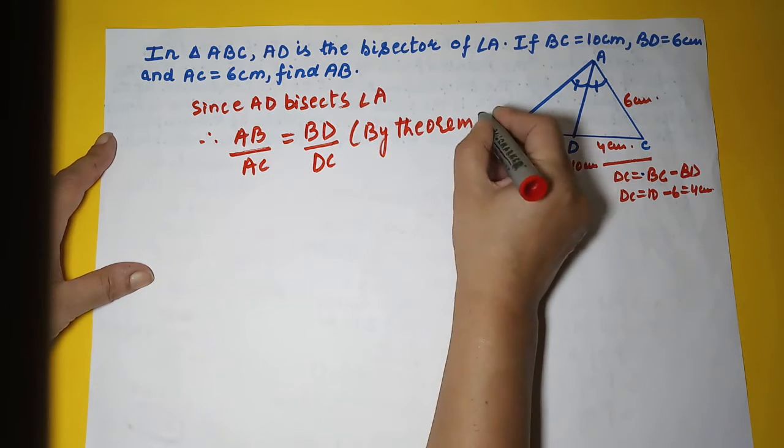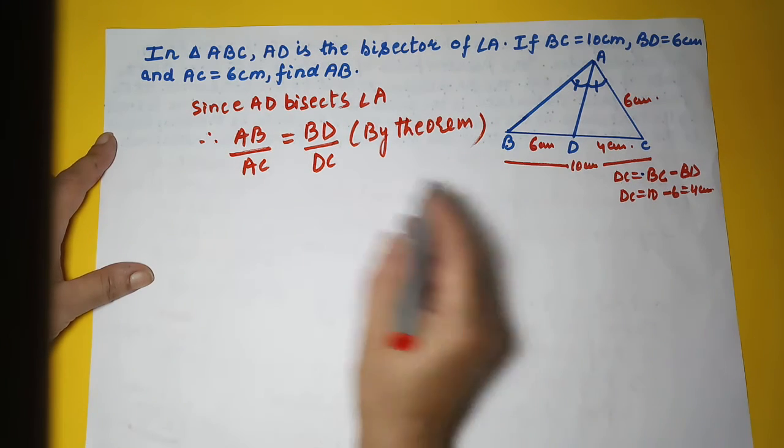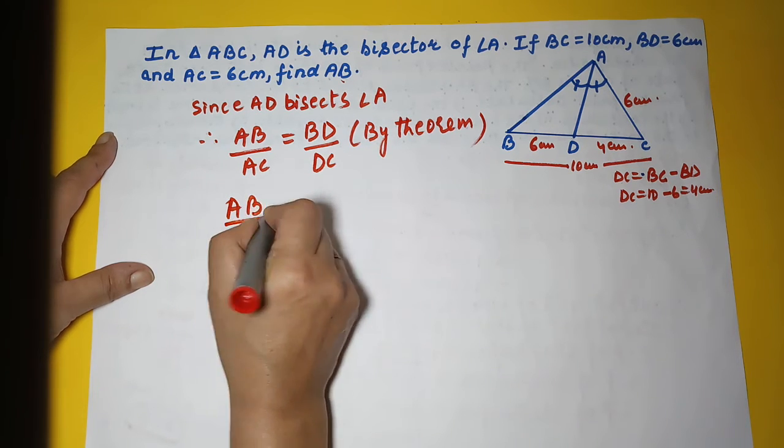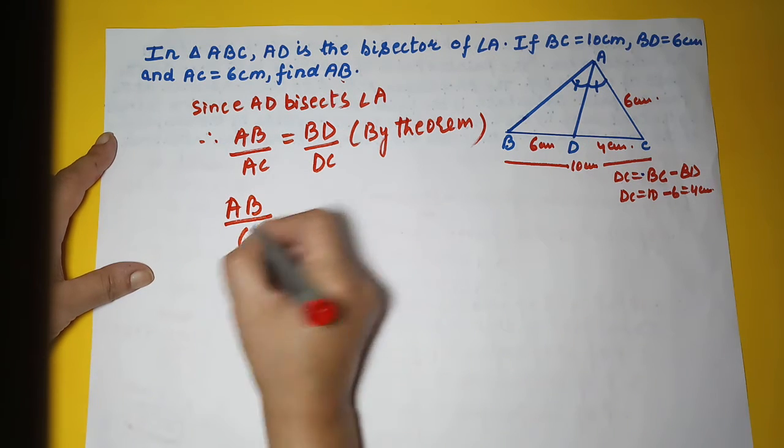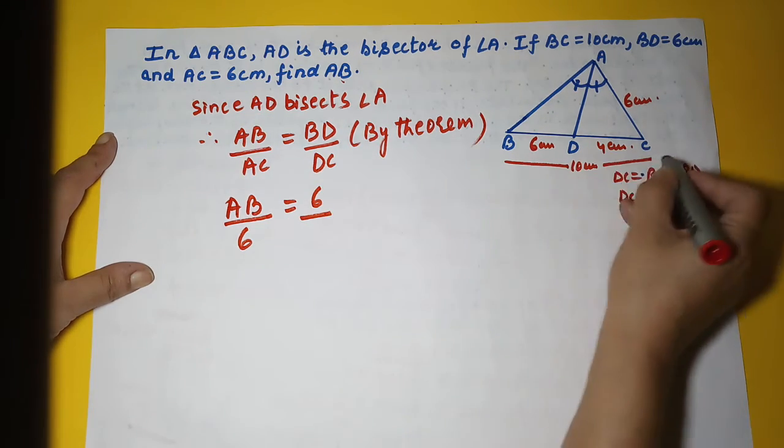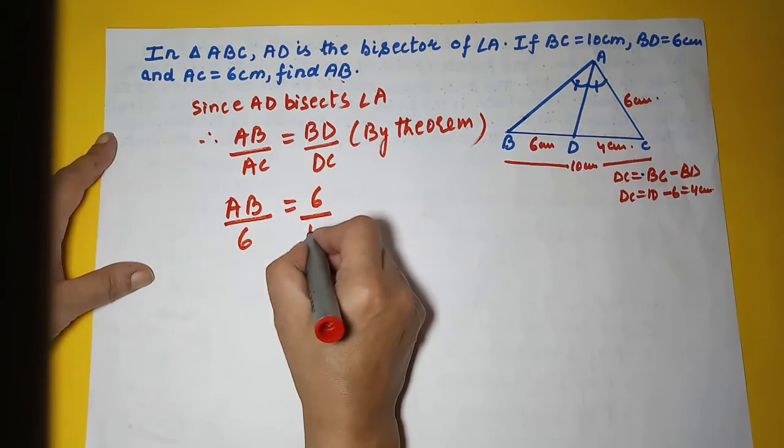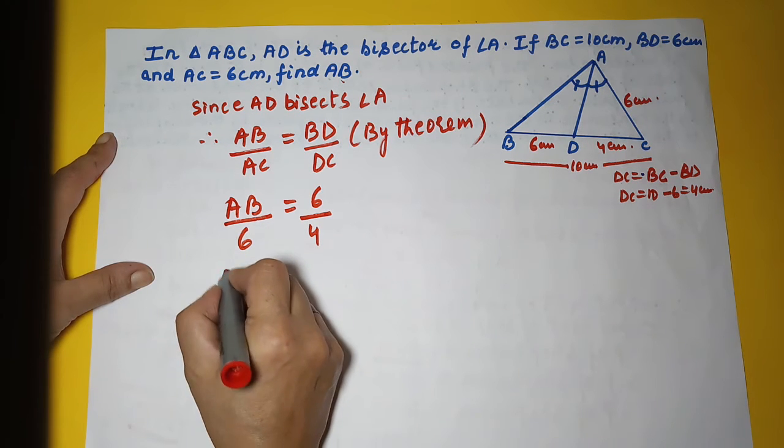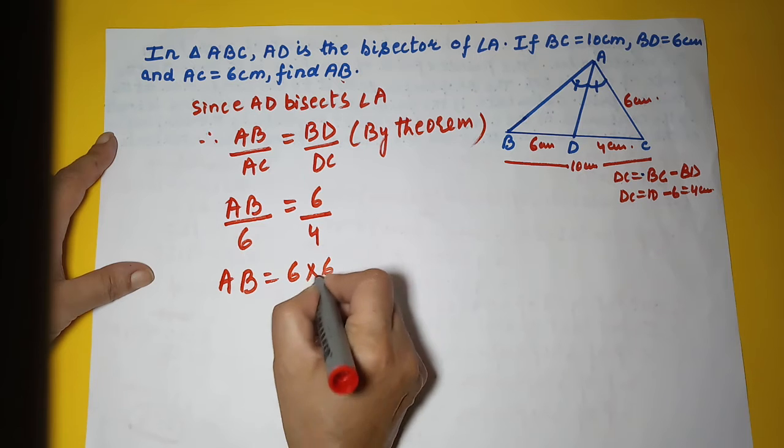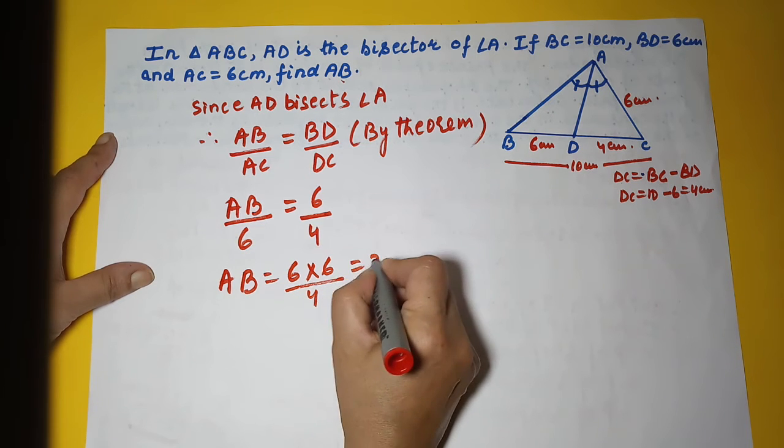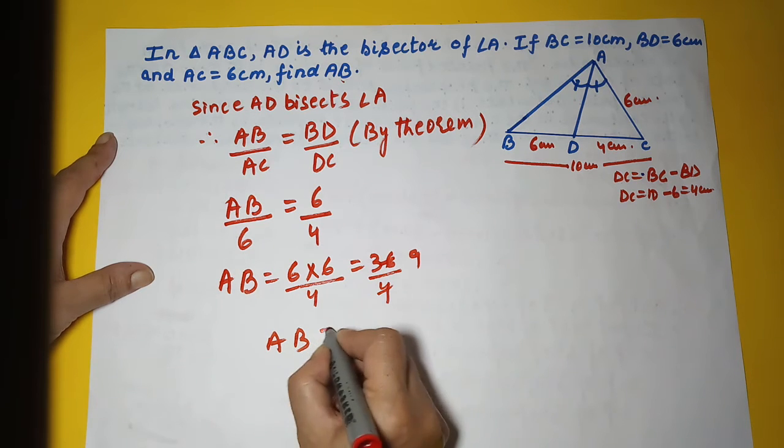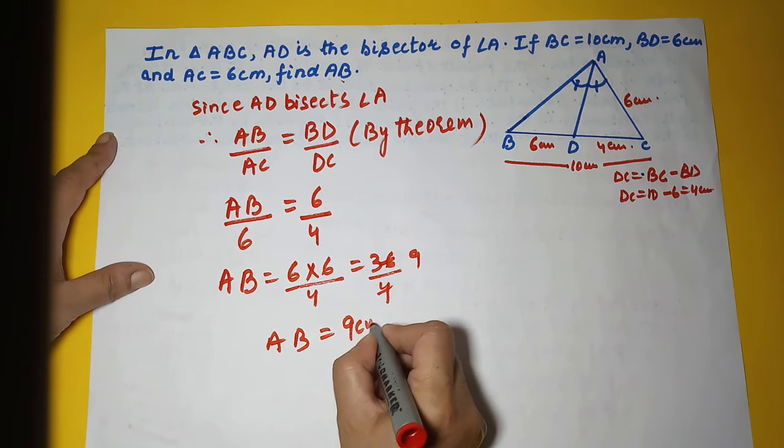Now let's substitute all the values. AB we have to calculate. AC is given 6, BD is 6, and DC we calculated as 4 centimeters. So my AB will be 6 times 6 divided by 4, which is 36 divided by 4. So I got AB as 9 centimeters.